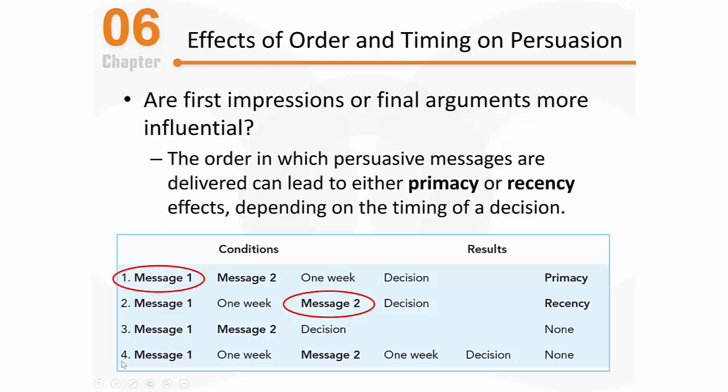The fourth condition's results are interesting when applied to scheduling presidential conventions. If one convention is held first — say the Democrats — and then weeks later the other party holds theirs — say the Republicans — and then more weeks pass before election day, the research would show that being first or second really wouldn't influence the final decision. There tend to be neither recency effects nor primacy effects in those situations, so neither first impressions nor final arguments give you a clear advantage.